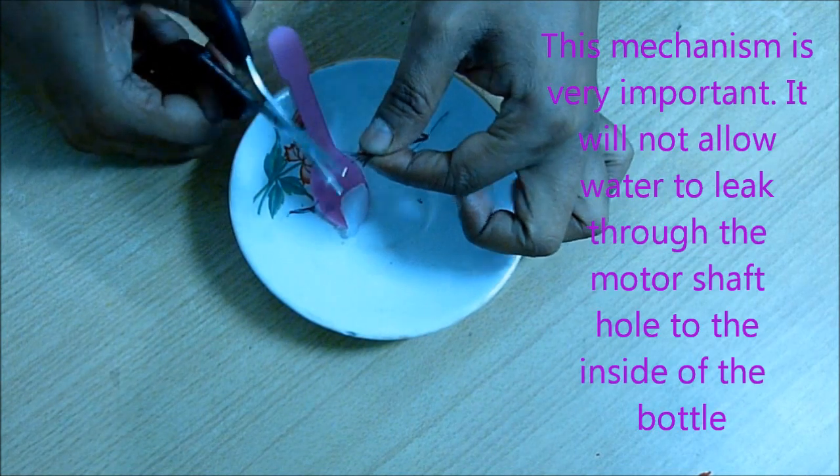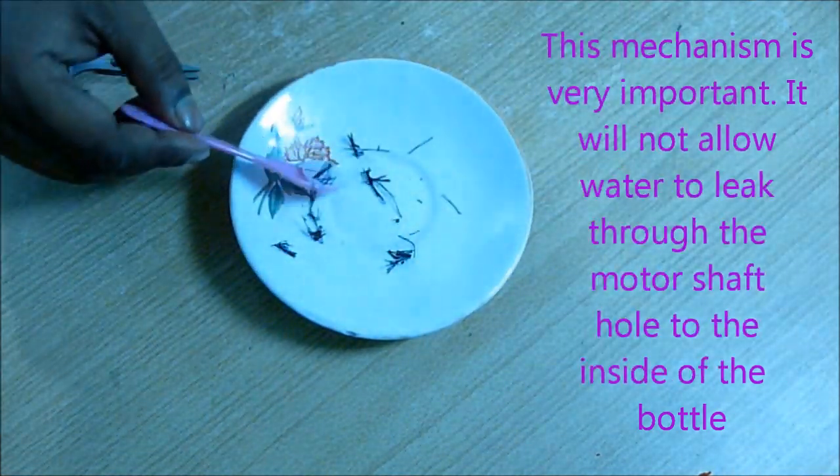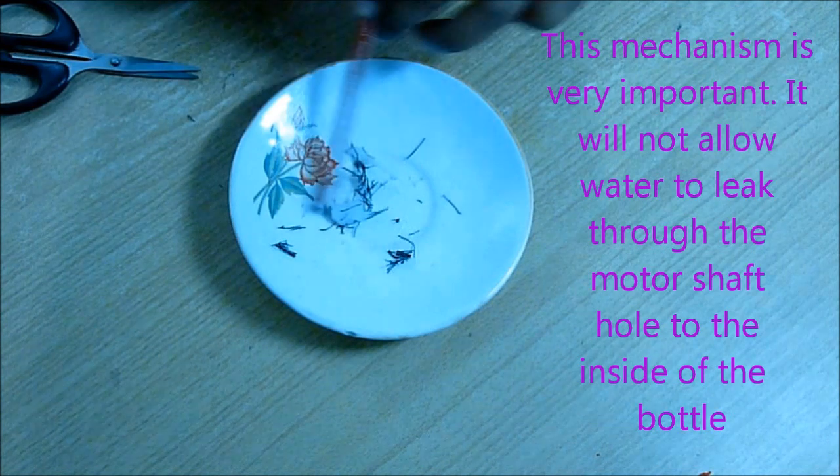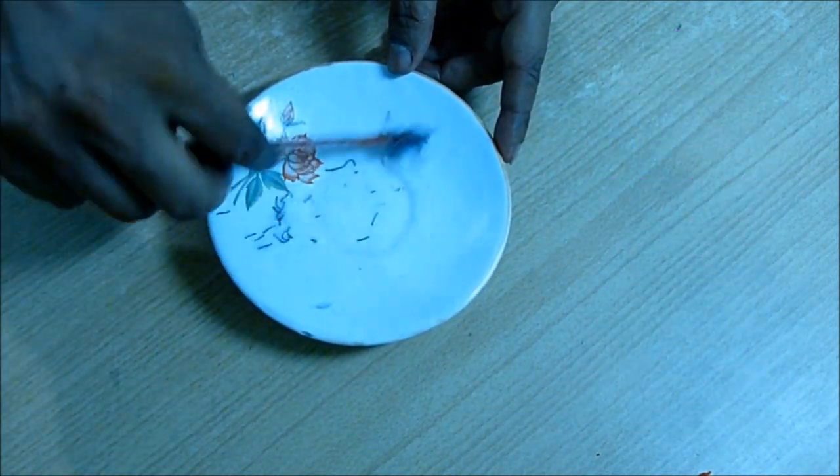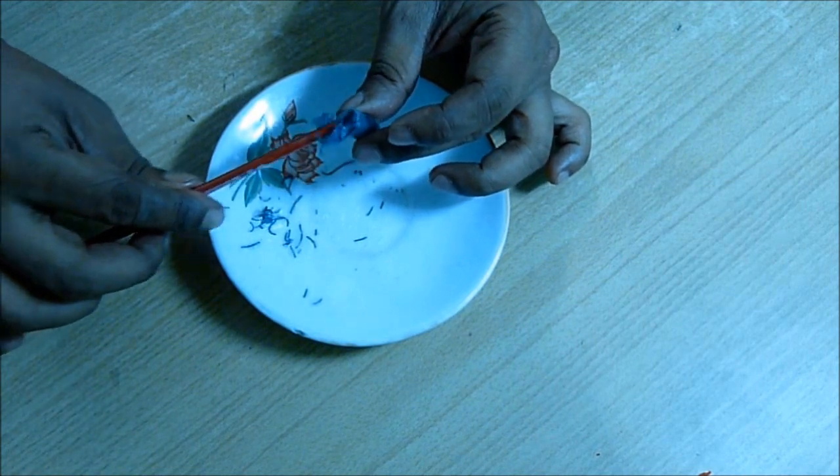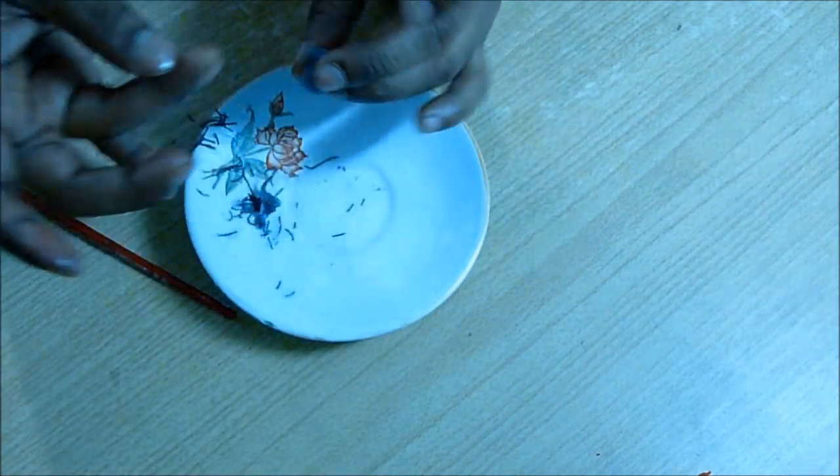Fill the small cap with this gel. This mechanism is very important. It will not allow the water to leak through the motor shaft hole to the inside of the bottle. Thus the motor and the battery will be safe.